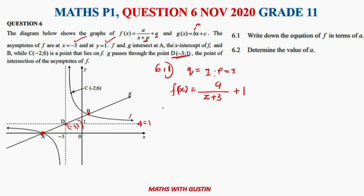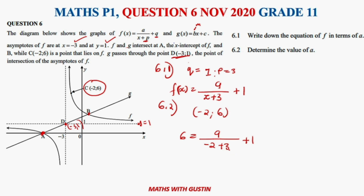Question 6.2 asks us to determine the value of a. They gave us point C at (-2, 6) which is on f. We substitute: 6 = a / (-2 + 3) + 1. Taking 1 to the other side: 5 = a / 1, therefore a = 5.